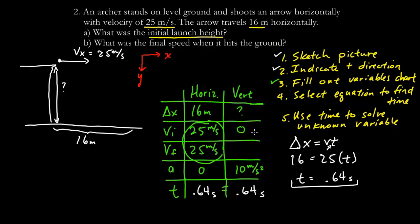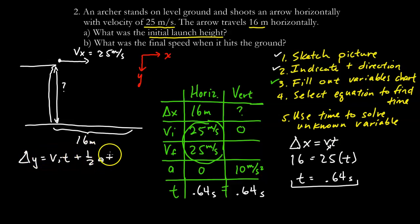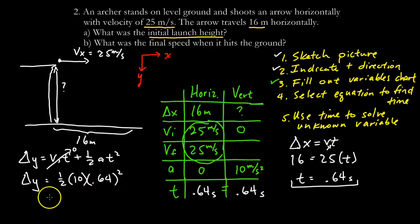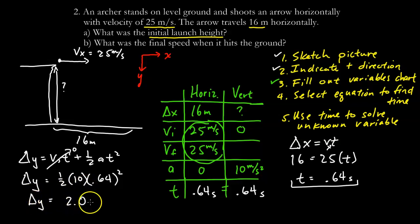Now using the kinematic equation: delta y equals v_i times t plus one-half times a times t squared. Since initial vertical velocity is zero, this simplifies to delta y equals one-half times a times t squared. Substituting: delta y equals one-half times 10 times 0.64 squared. Calculating gives delta y equals 2 meters.